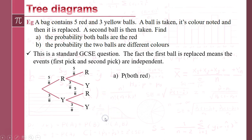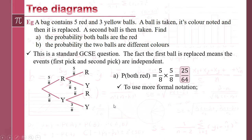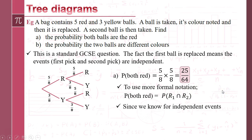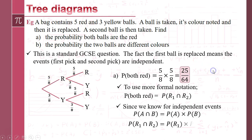There's our tree diagram. The probability both balls are red would be that value there — nothing new or particularly exciting about that. But let's look at what that means in terms of notation. The probability both are red is the probability the first ball is red AND the probability the second ball is red — that's an intersection. For independent events, P(A ∩ B) is just the two things multiplied together, which is exactly what we do when we multiply along the branches of a tree diagram. So P(R₁ ∩ R₂) = P(R₁) × P(R₂).